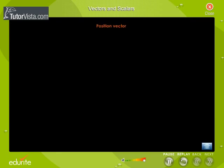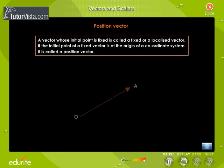Position vector: A vector whose initial point is fixed is called a fixed or a localized vector. If the initial point of a fixed vector is at the origin of the coordinate system, it is called a position vector. A position vector is used to locate the position of a particle in a plane.